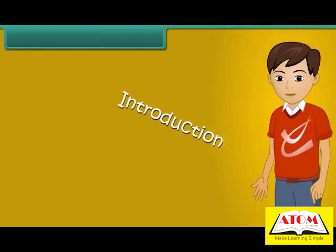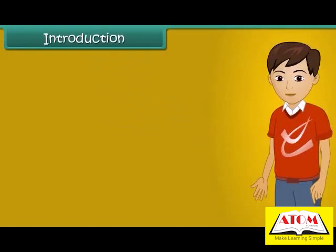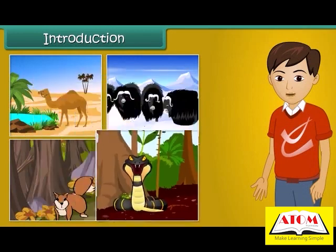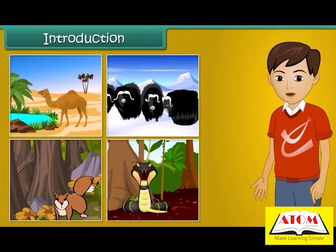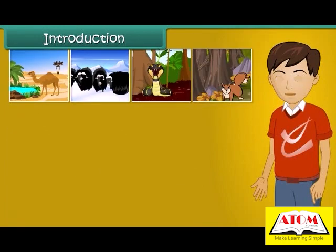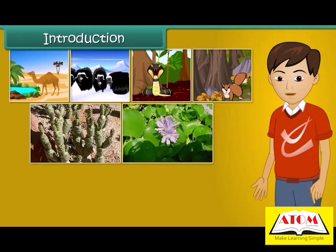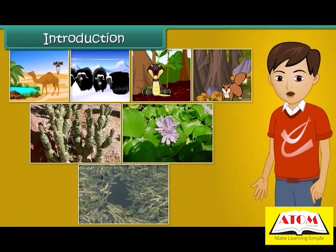Hello students. Look at the images given here. Camel, jack squirrel, and snakes are all terrestrial animals, but their physical appearance and behavior are very different from each other. Similarly, plants like cactus, water hyacinth, and hydrilla are also different in their physical appearance and behavior.